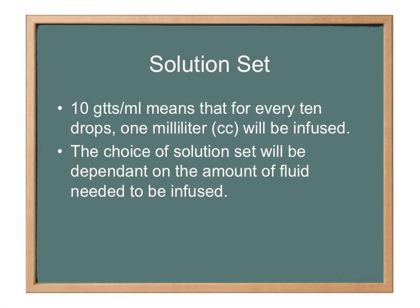The choice of solution set will be very dependent on the amount of fluid you need to infuse. If you have somebody in hypovolemic shock with a pressure of 70 over palp and you're trying to get some volume in them, you're not going to want to go with a mini drip — that 60-drop set. You're going to want to use a macro drip, like a 10-drop per mL set, so you can get more volume in quicker. For drug dosages, you're generally going to give most infusions using a mini drip or micro drop set, though many IV pumps will count the drops for you.